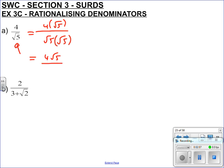So on the top we get 4 root 5, and on the bottom we get root 5 times root 5, which is 5. There we go, we have rationalised a denominator, the denominator is rational, okay?